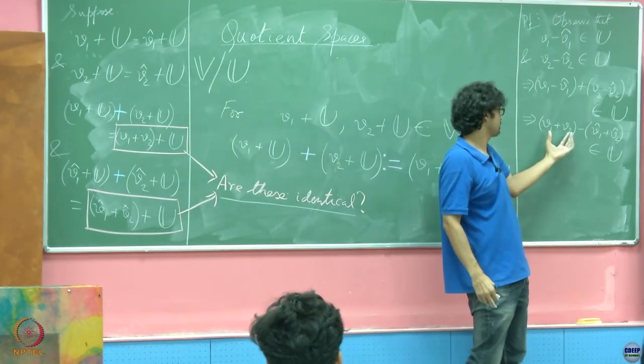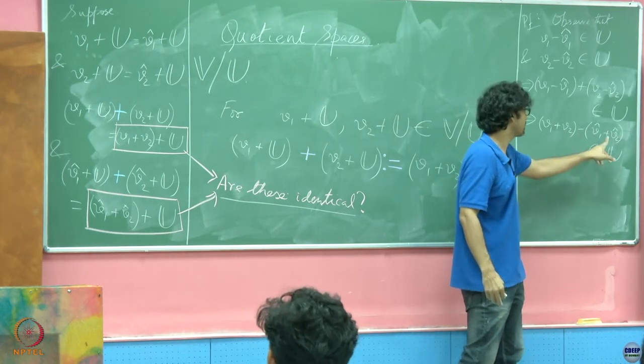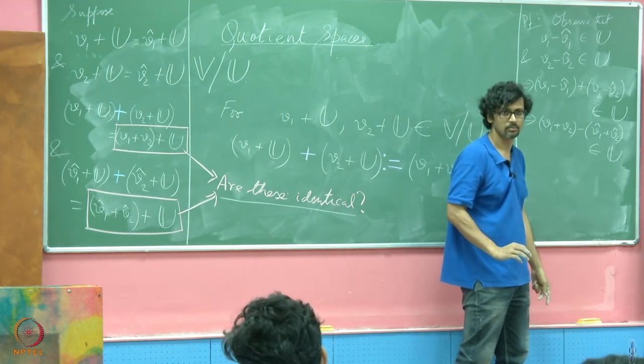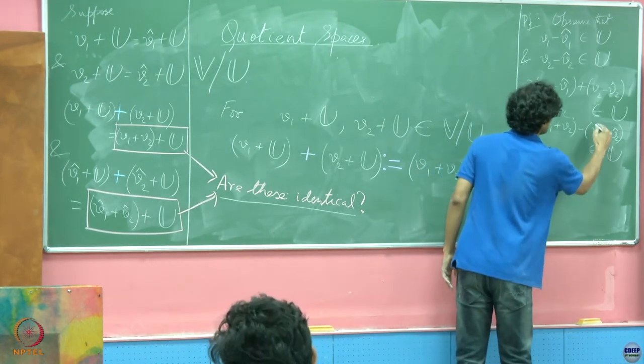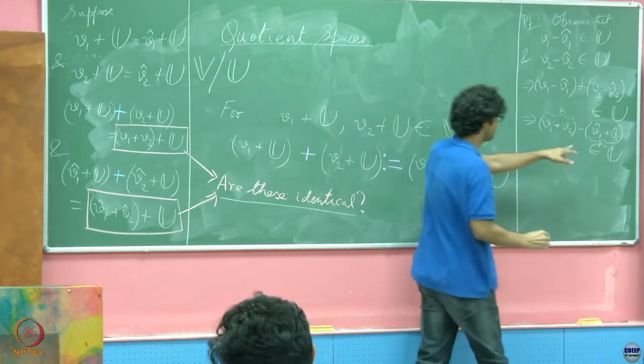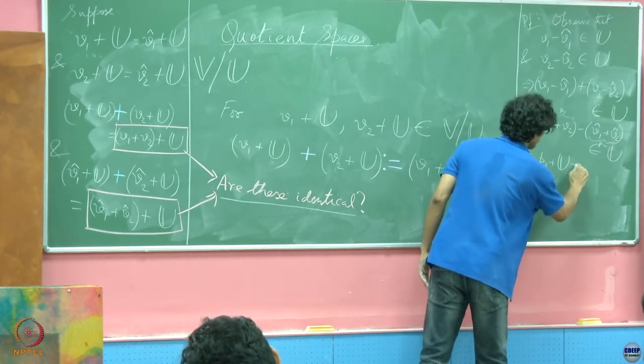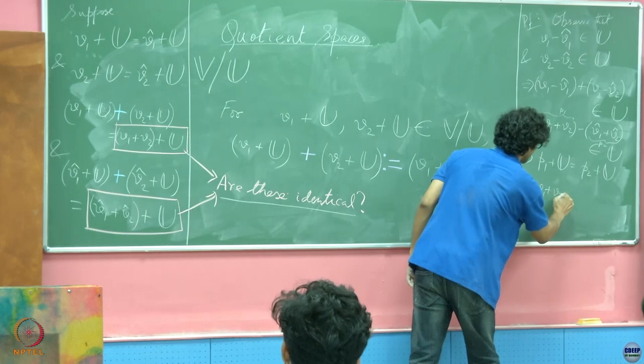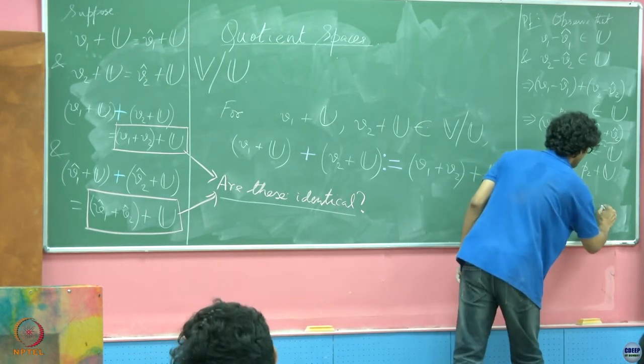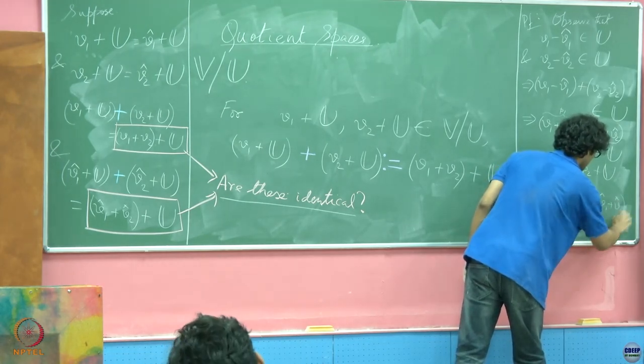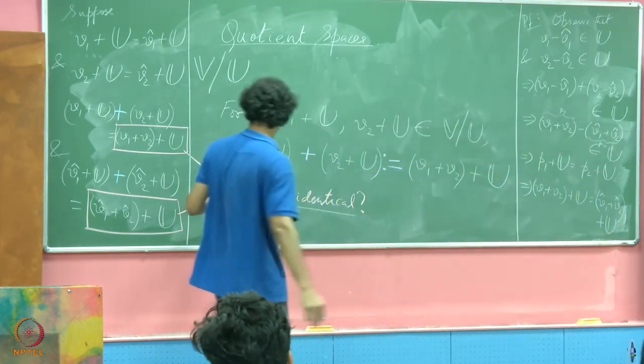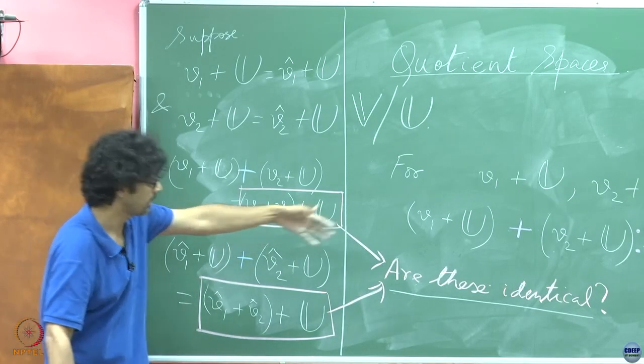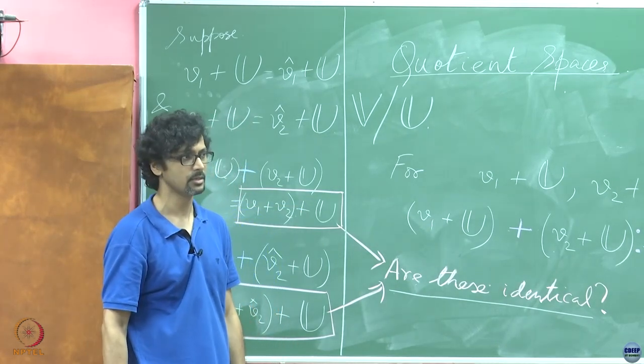But now I am going to rearrange the terms a bit and write V1 plus V2 minus V1 hat plus V2 hat. And this, obviously rearrangement of term does nothing to change the inclusion of an object in a vector space or not. So this is true. But what does this mean? If you now call this as some vector P1 and call this as some vector P2, if P1 minus P2 belongs to U, then is it not the case that we have just seen earlier that P1 plus U is equal to P2 plus U. So let us call this P1 and P2, which means P1 plus U is equal to P2 plus U and then plugging back whatever is P1, you have V1 plus V2 plus U is equal to V1 hat plus V2 hat plus U. So therefore, indeed the resultant that we end up with here, this object and this object cannot help but be the same. So therefore, this addition is well defined.